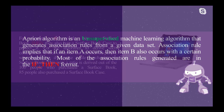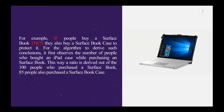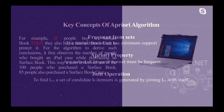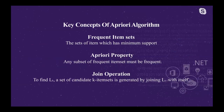For example, if people buy a Surface Book, they also buy a Surface Book case to protect it. For the algorithm to derive such conclusions, it first observes the number of people who bought an iPad case while purchasing a Surface Book. This way a ratio is derived — out of 100 people who purchased a Surface Book, 85 people also purchased a Surface Book case.